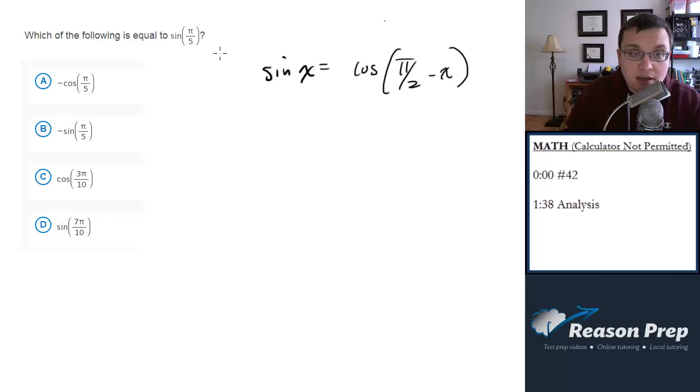That's the relationship between sine and cosine. You can plug pi over 5 in for x and solve this directly.